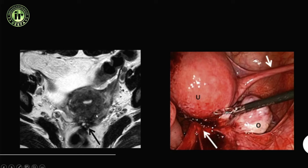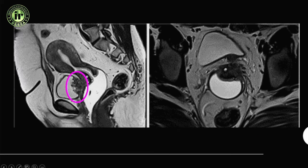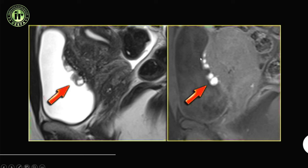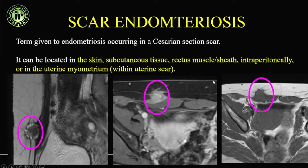Retrospective review of your cases may also reveal deposits. Endometriosis can go anteriorly and invade the urinary bladder, which is relatively uncommon but known. T1 fat sat will show these kinds of deposits on the anterior wall of the urinary bladder.